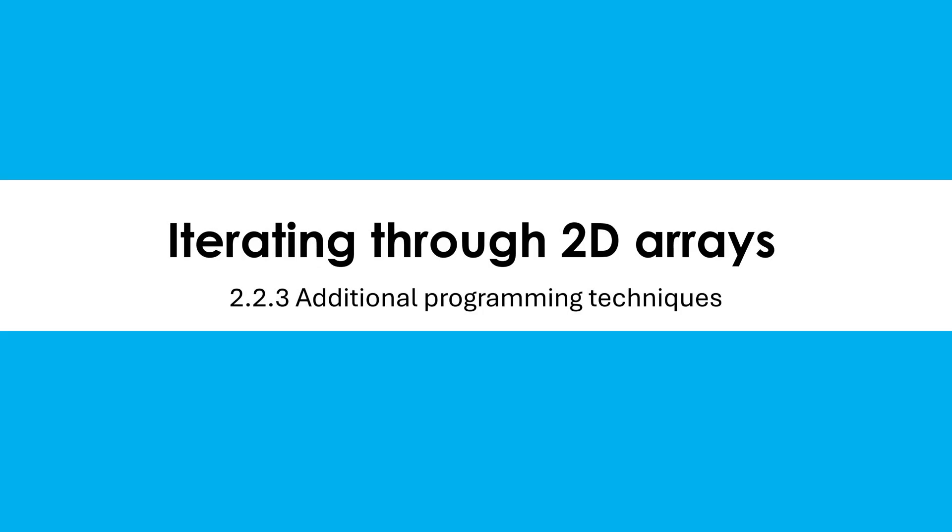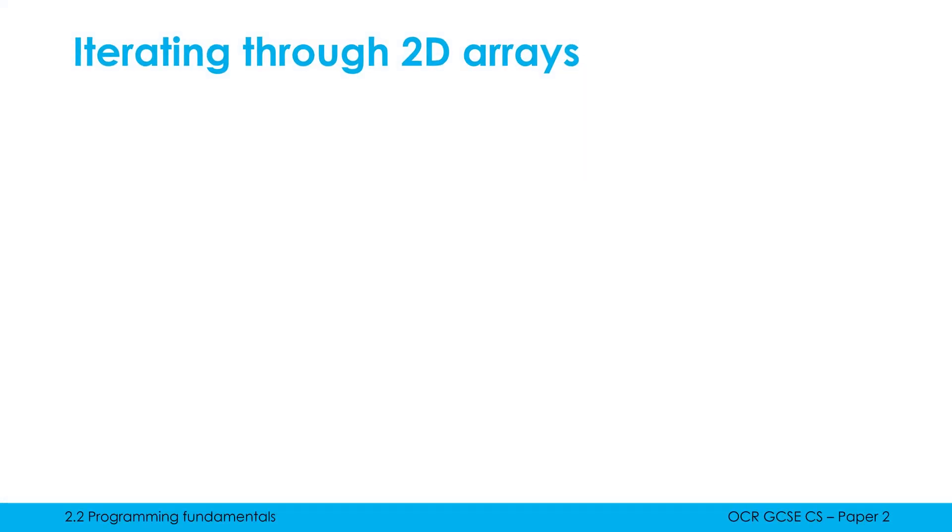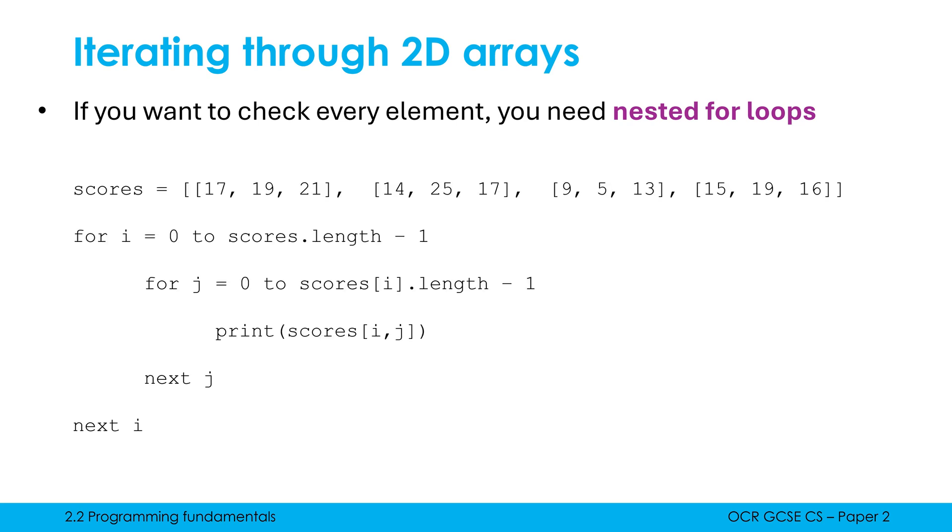Having a look at what a 2D array is, let's now look at how we can iterate through them, which is one of the key ways we use 2D arrays in programs. I'm going to start with the bad news first or the nasty bit of code first. Here is how we potentially iterate through a 2D array. If I want to iterate through it, iterating through it is just a way of saying I want to check every element.